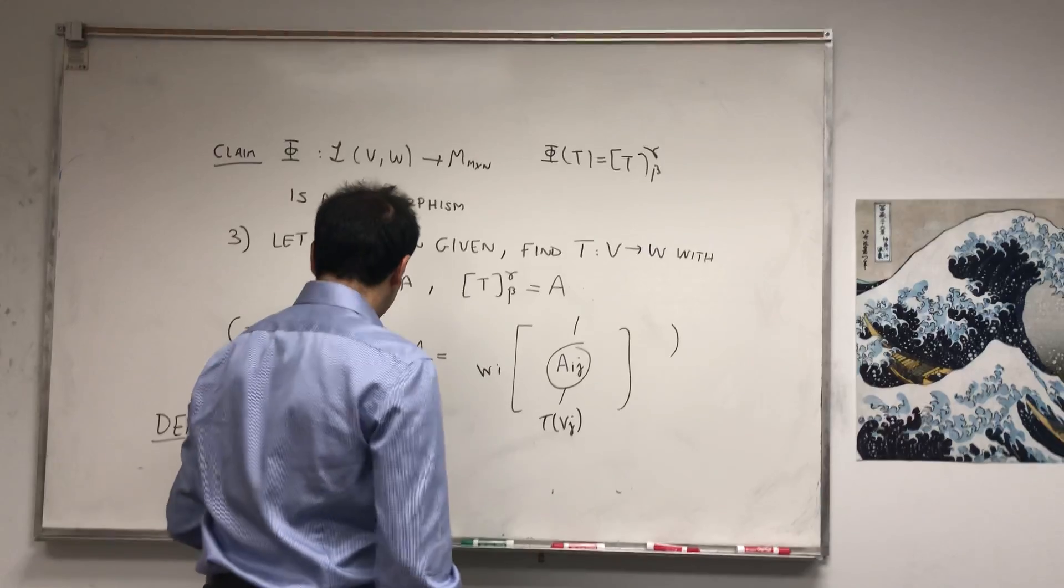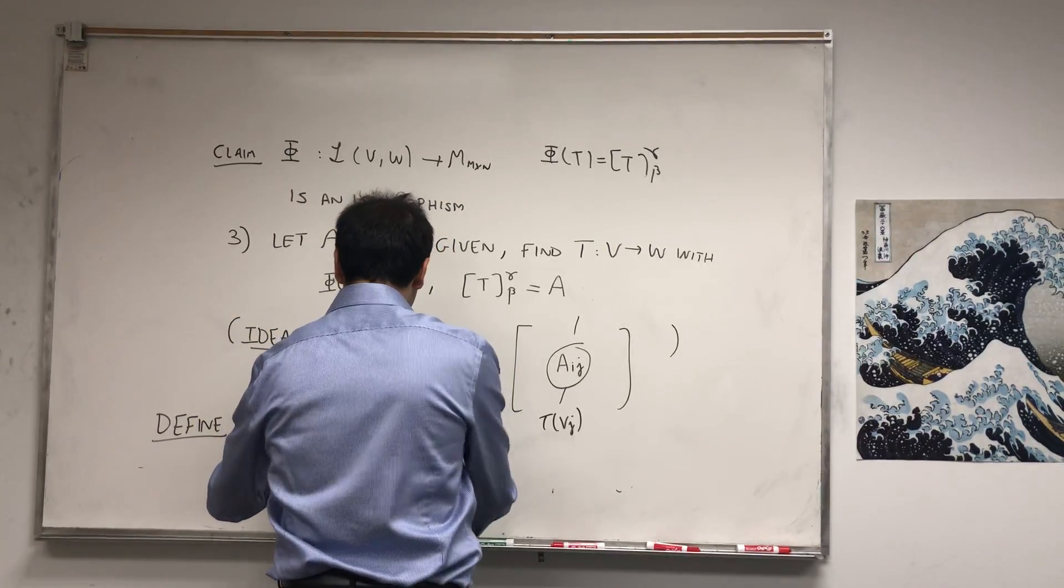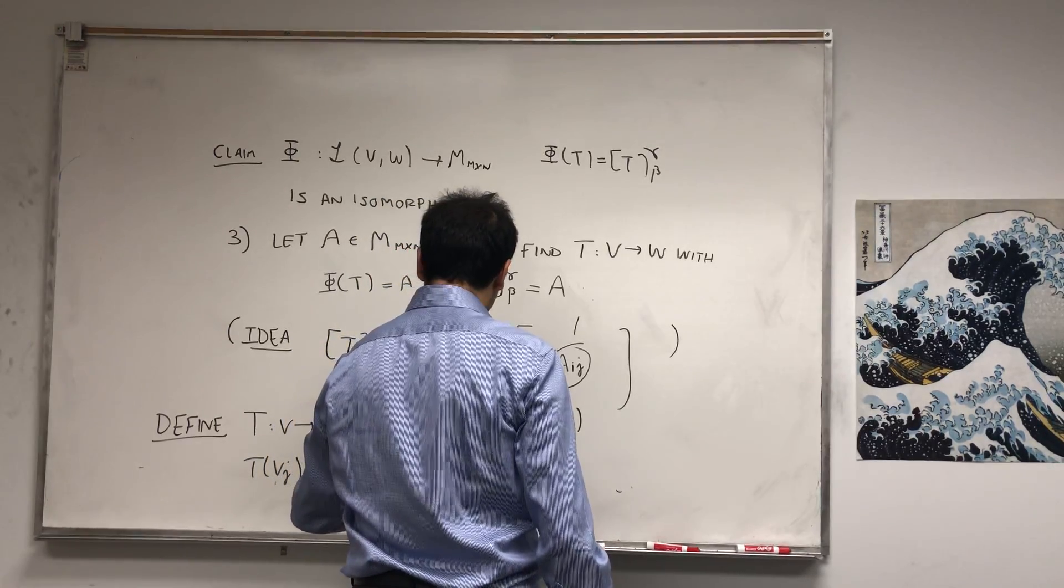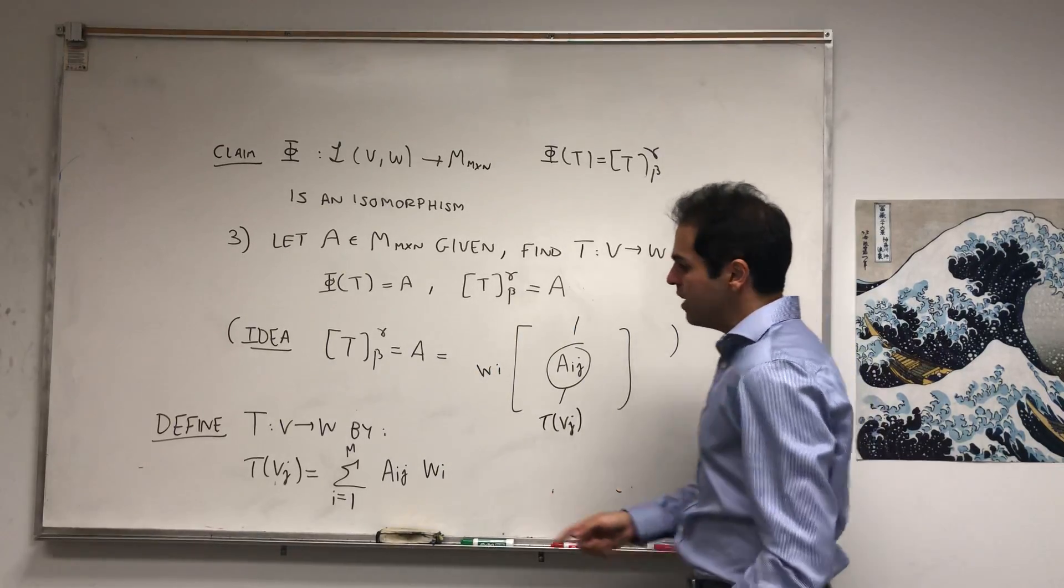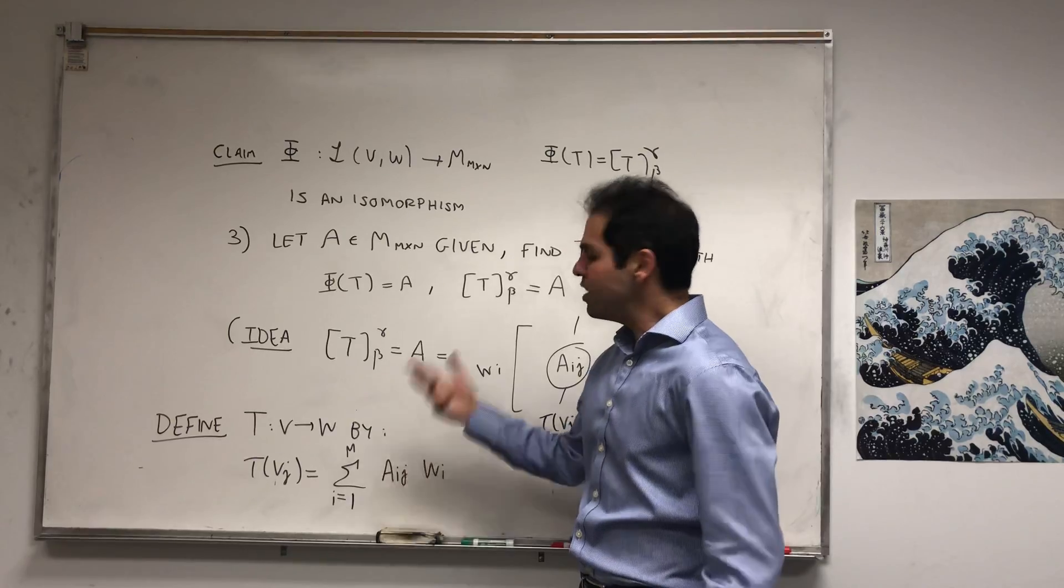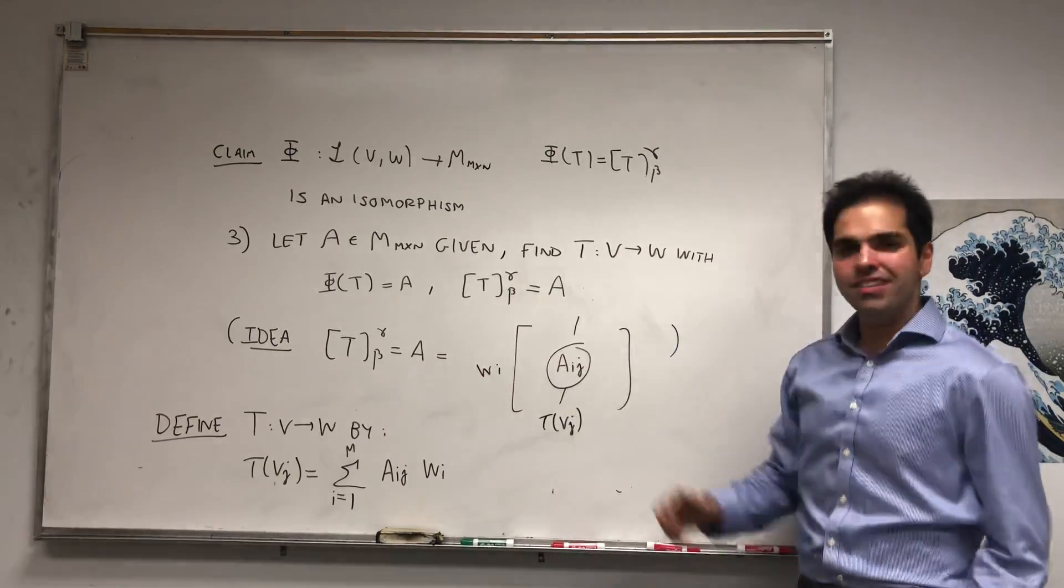So the idea is define T from V to W by T(v_j) equals the sum from 1 to m, so one to mouthput, of a_ij times w_i. And the reason we're summing over i is because here we have a j, here we have a j, so we don't sum over j because that would make j disappear. We want to sum over i.